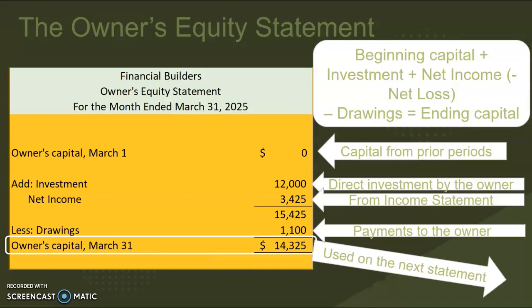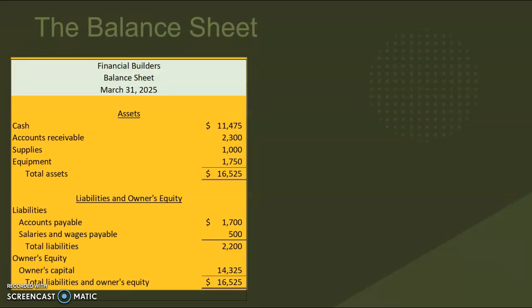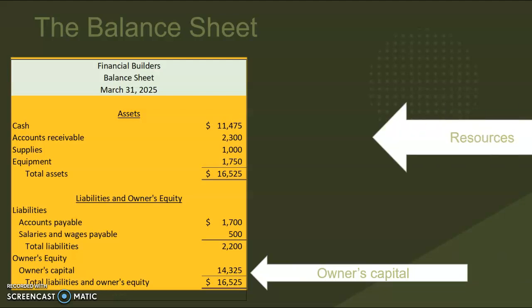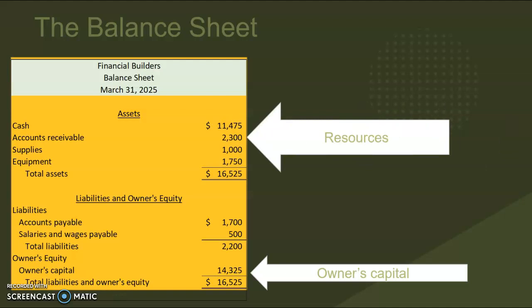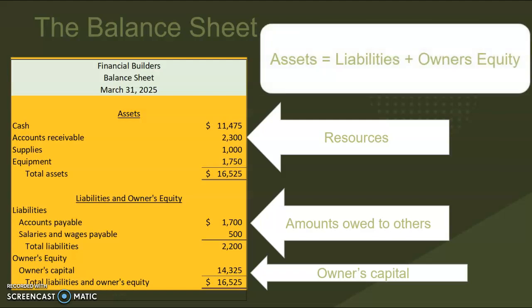That ending capital of $14,325 would be the starting point for next month's financial statement for April. That same $14,000 is also carried forward into our next financial statement, the balance sheet. The balance sheet shows our owner's capital at the bottom, balanced against our assets — our resources — and those resources are balanced against our liabilities and the owner's equity. Our formula is: assets equals liabilities plus owner's equity. We can see that our balance sheet balances because that equal sign holds true, and we always make the balance sheet balance — we never break that rule.